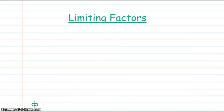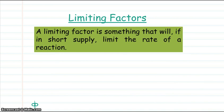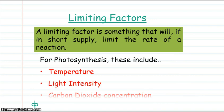If we now look at the limiting factors of photosynthesis, a limiting factor is something that will, if in short supply, limit the rate of a reaction. For photosynthesis, these include temperature, light intensity, and carbon dioxide concentration.